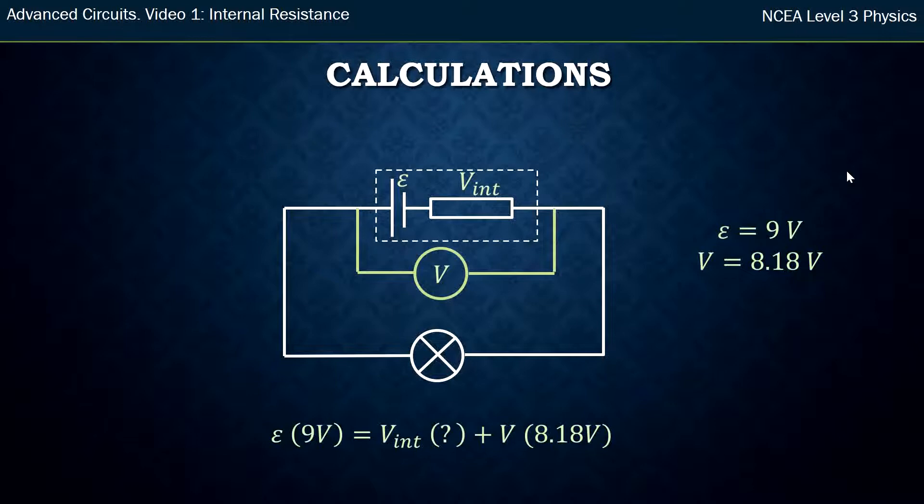So I know, because when it was unconnected, it was 9 volts—that's what's supplied. I know that the lamp, when it is connected, is using 8.18, and so the difference must be what's being used up in the internal resistance. And so the difference between 9 and 8.18 is 0.82.